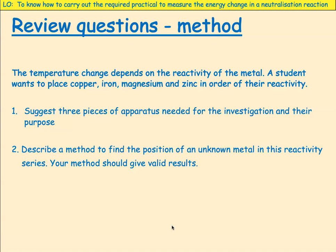The temperature change depends on the reactivity of the metal. A student wants to place copper, iron, magnesium, and zinc in order of their reactivity. Suggest three pieces of equipment needed for the investigation and their purpose, and describe a method to find the position of an unknown metal. Pause the video now and come back when you've answered.